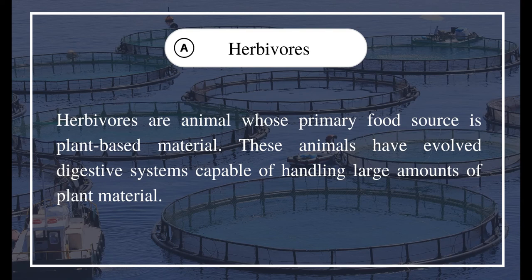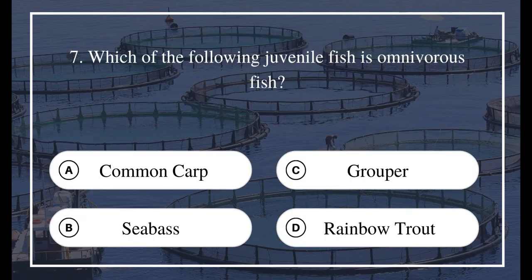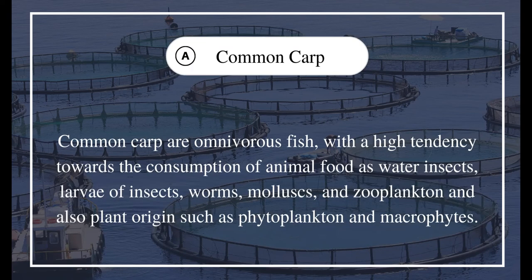Question 7: Which of the following juvenile fish is an omnivorous fish? A) Common carp, B) Sea bass, C) Grouper, D) Rainbow trout. The answer is A) Common carp. Common carp are omnivorous fish with a high tendency towards consumption of animal food such as water insects, larvae of insects, worms, molluscs, and zooplankton, and also plant origins such as phytoplankton and macrophytes.